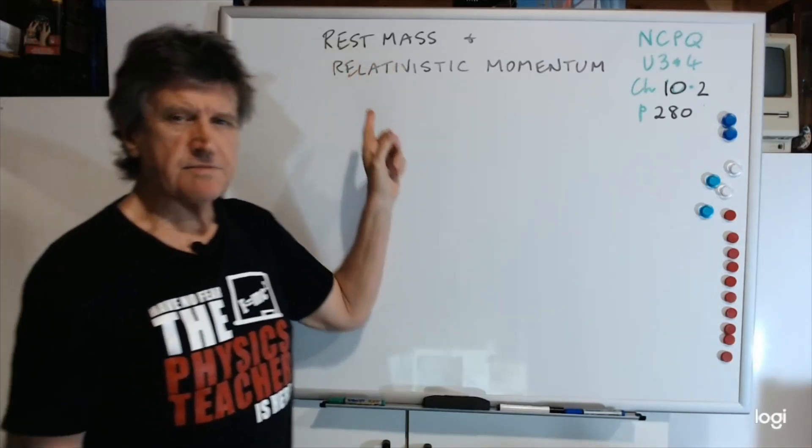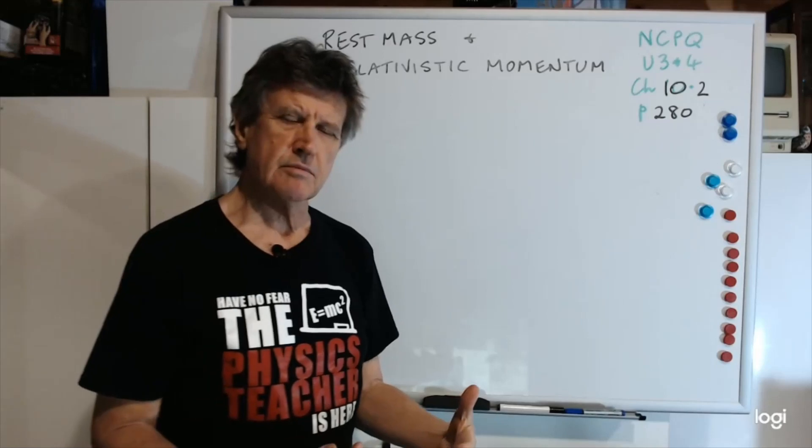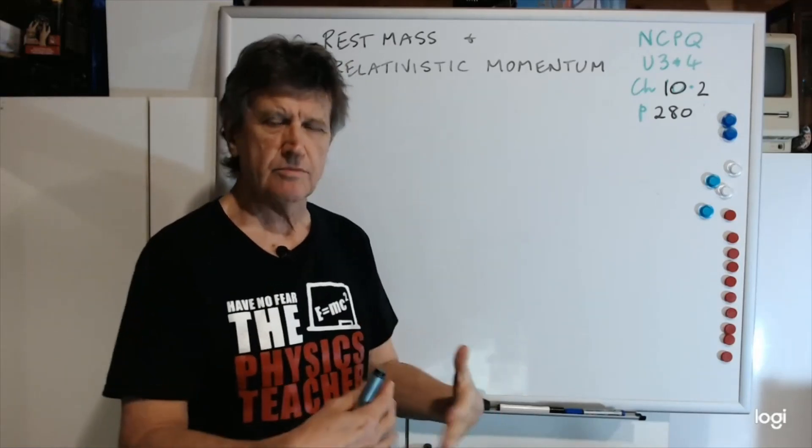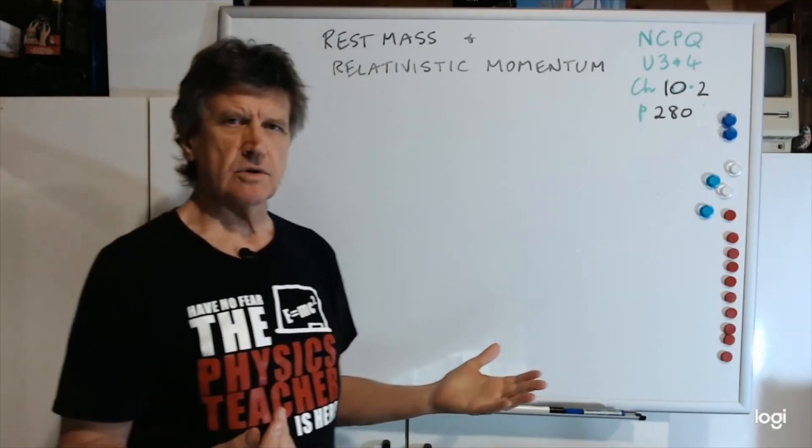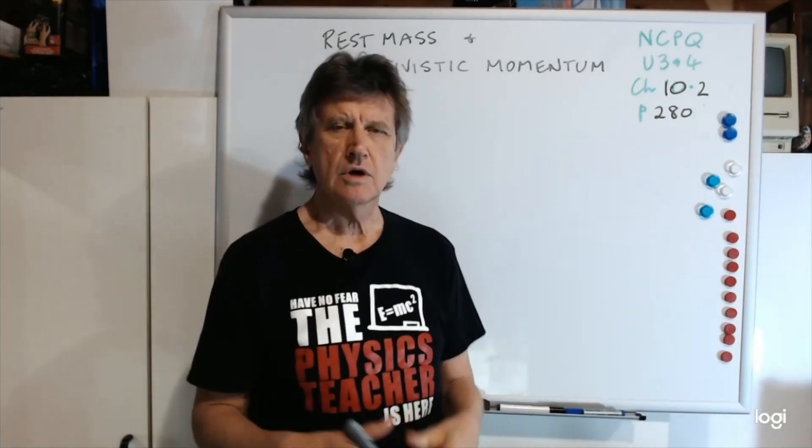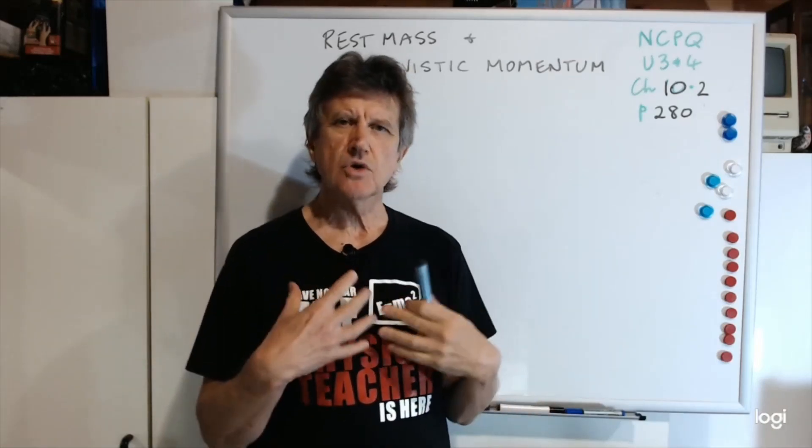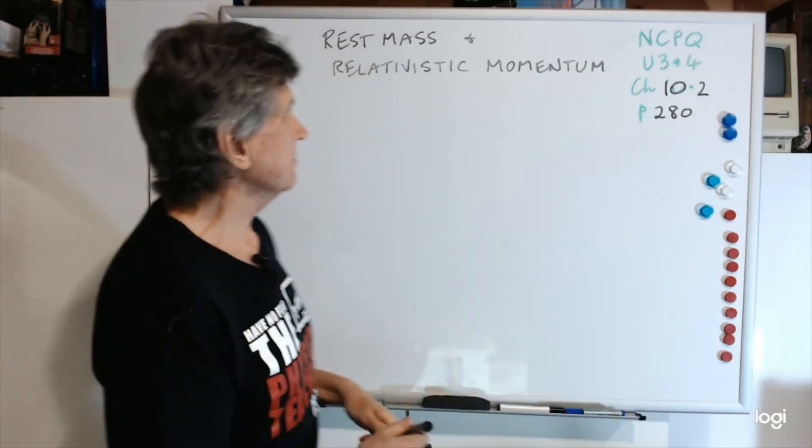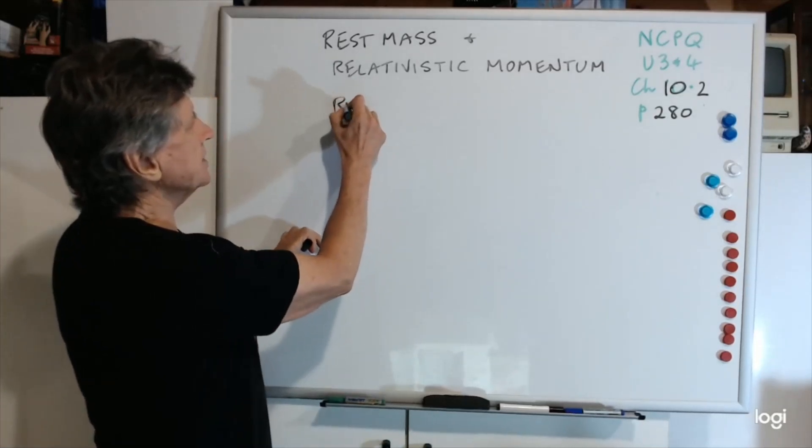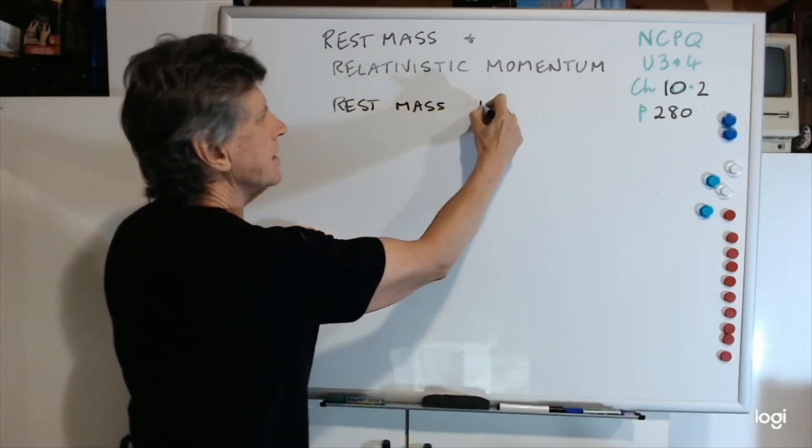You'll notice the term rest mass. That would imply that's the mass of an object as measured by someone who's not moving relative to the object. For instance, in your laboratory, if you measured the mass of something on your electronic balance, you'd be measuring the rest mass because you're at rest with respect to that mass. So rest mass must have the symbol m0.